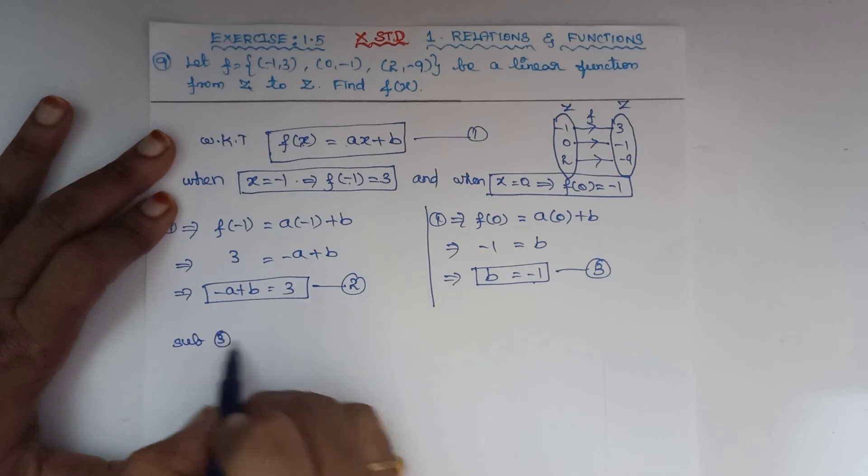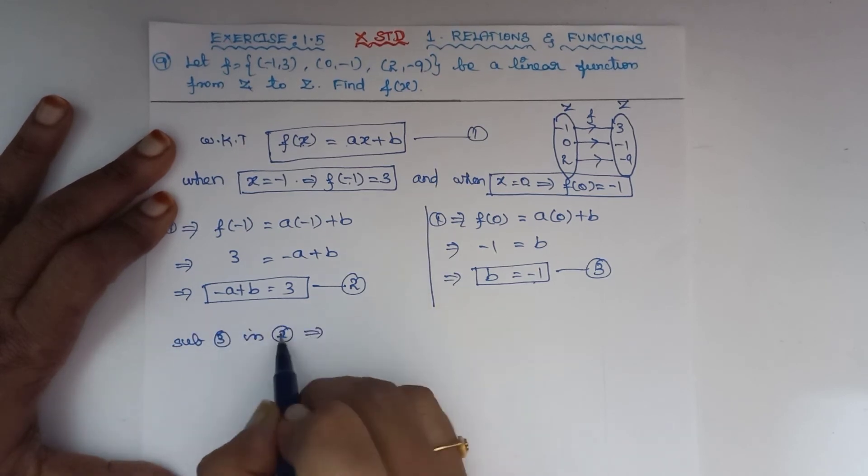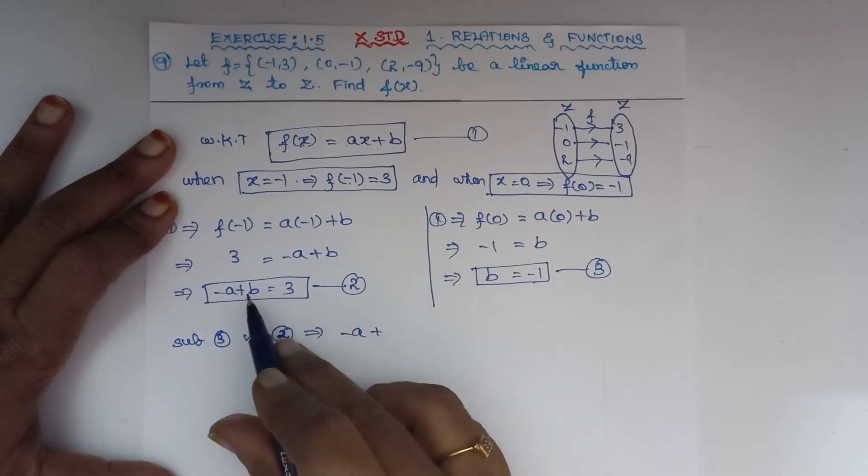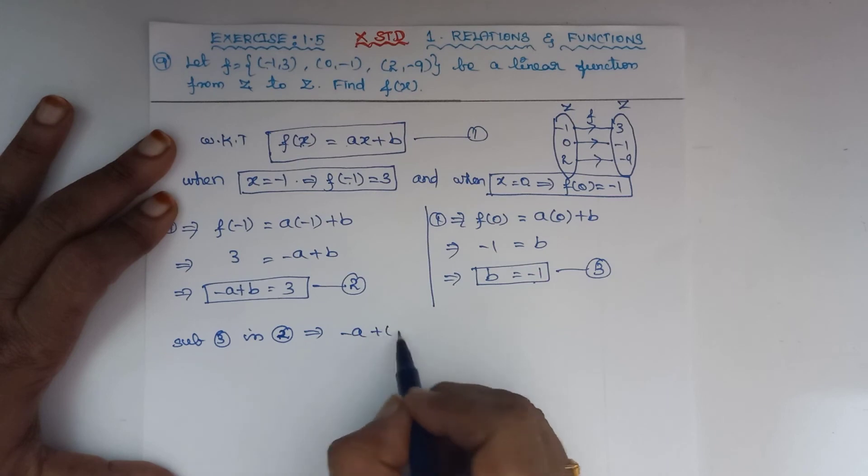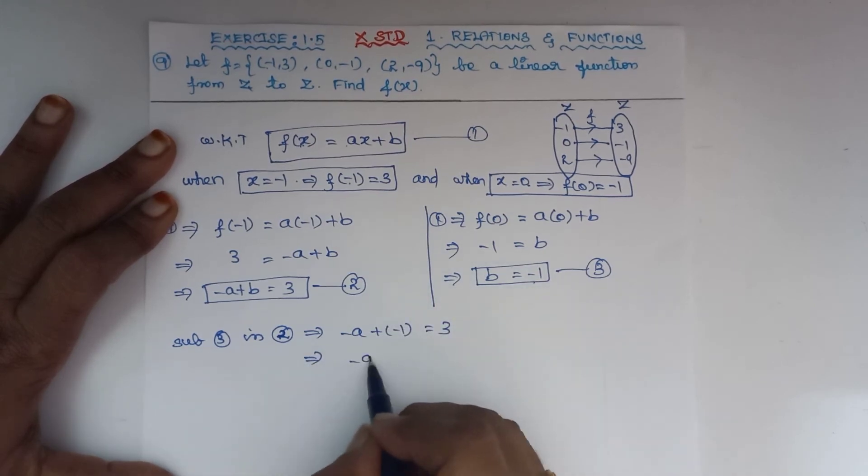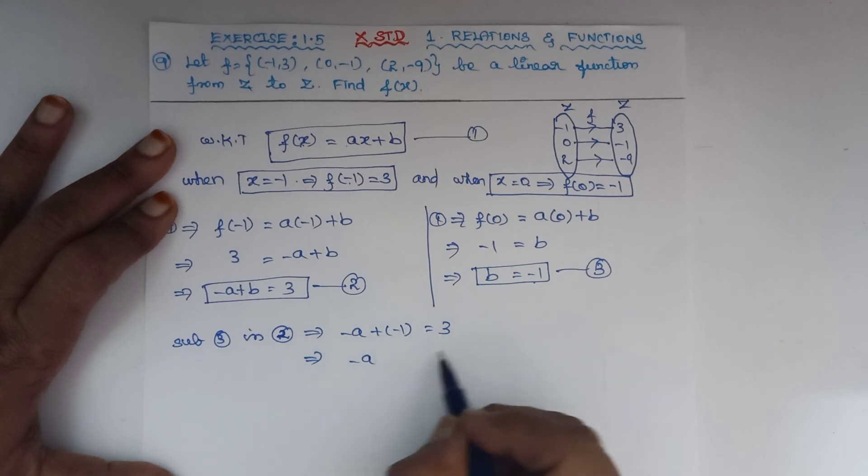Substituting equation 3 into equation 2: -1 is substituted for b, giving -a + (-1) = 3. Moving -1 to the right side: -a = 3 + 1 = 4.